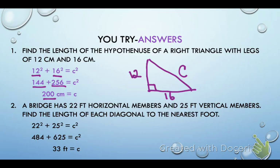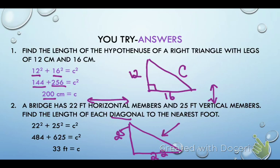And I get 200. The next one, a bridge has 22 foot horizontal and 25 foot vertical. So remember, horizontal is left and right. Vertical is up and down. And find the length of each diagonal. So that's going to be the side. So I could draw my picture. Here's my vertical 25. Here's my horizontal 22. And then I want to find the diagonal. Okay, so do the math and you get about 33 feet.